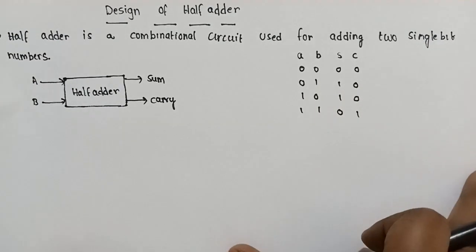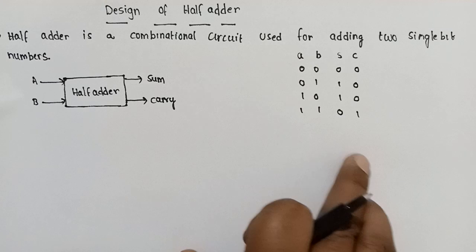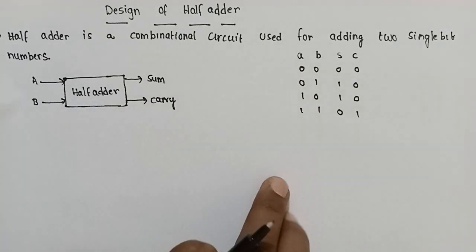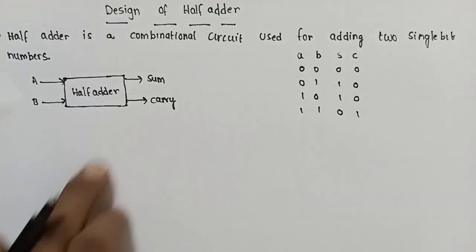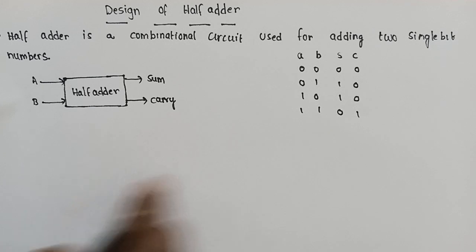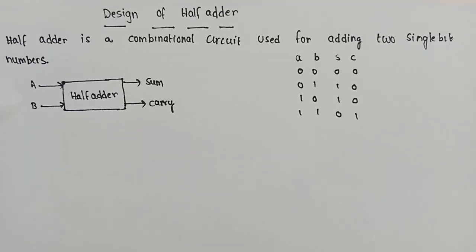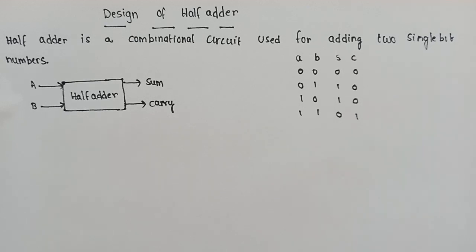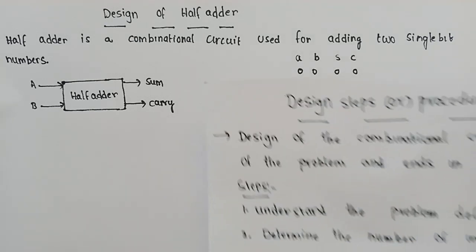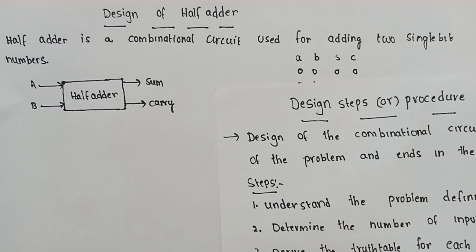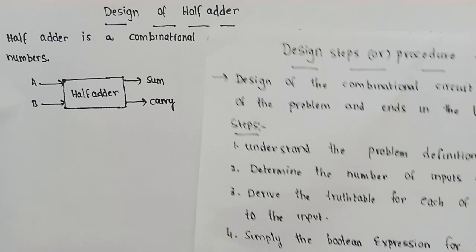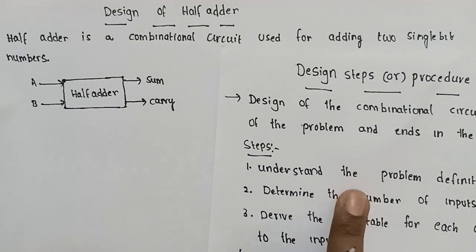This is a combinational circuit which is used for adding two single bits. Inputs are A and B — two single-bit inputs. Outputs are sum and carry. The first step in the design procedure is to understand the problem.